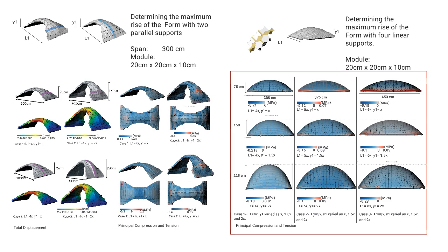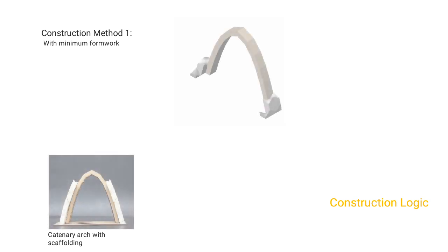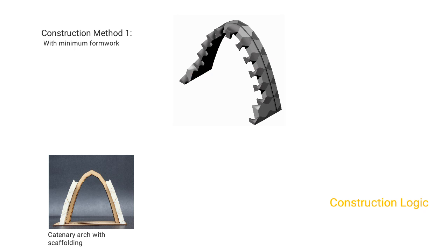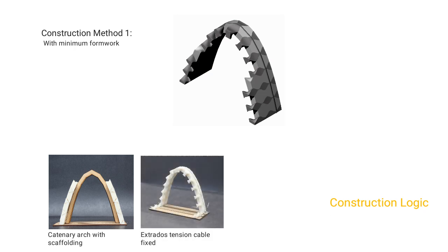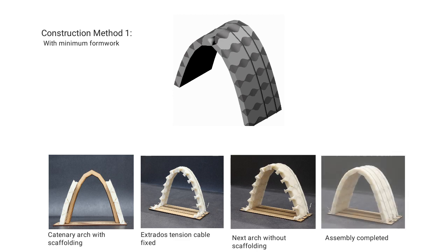Two methods of construction were visualized: one with minimum formwork, and one without. In construction method one, scaffolding is required only to assemble the first catenary arch. This is because modules are assembled by staggering, which creates a pocket for the next block and ensures interlocking. The assembly is kinematically constrained with a tension cable fixed at its base. The scaffolding is then removed, and following rows of arches can be assembled without scaffolding, repeating the same sequence.